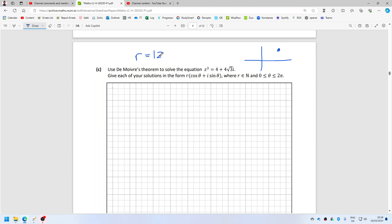The modulus of 4 plus 4 root 3 i is root of 16, and 4 root 3 squared is 48, so plus that's 64. So r equals 8.